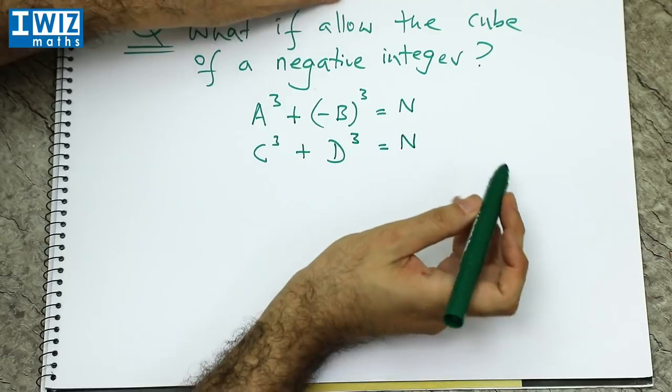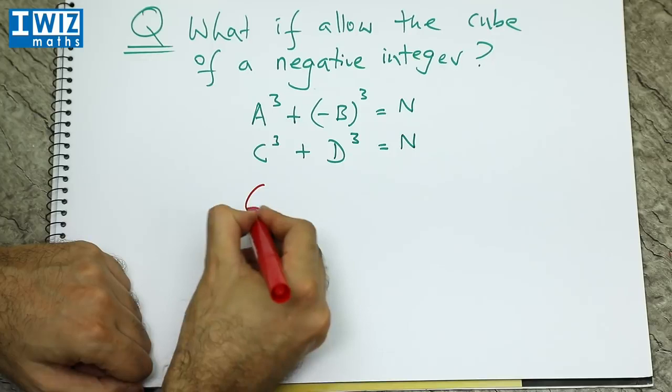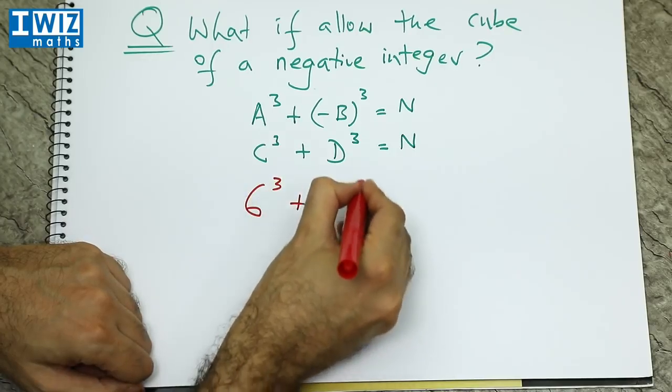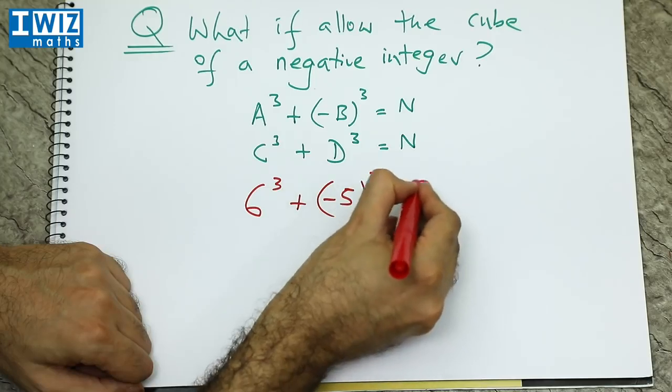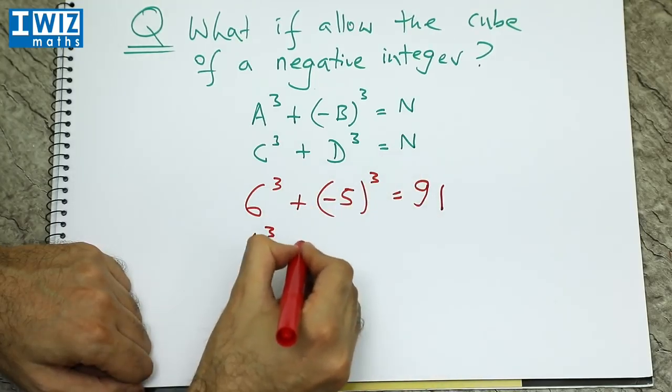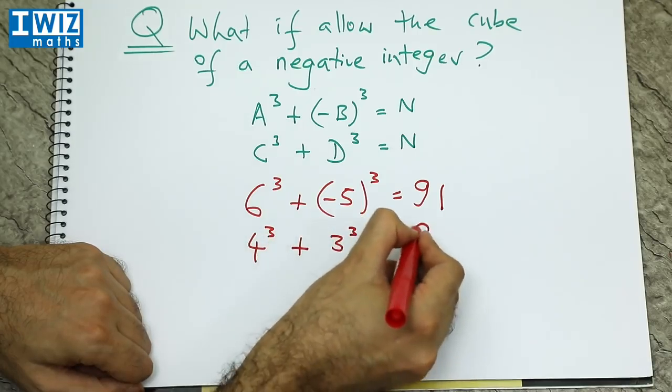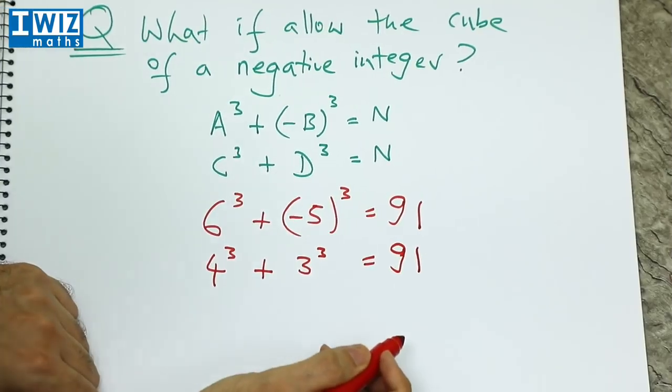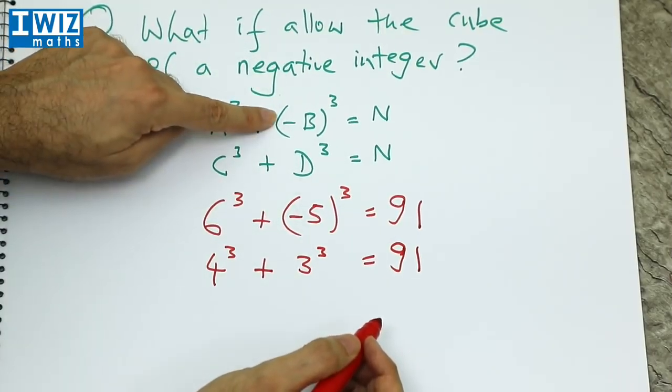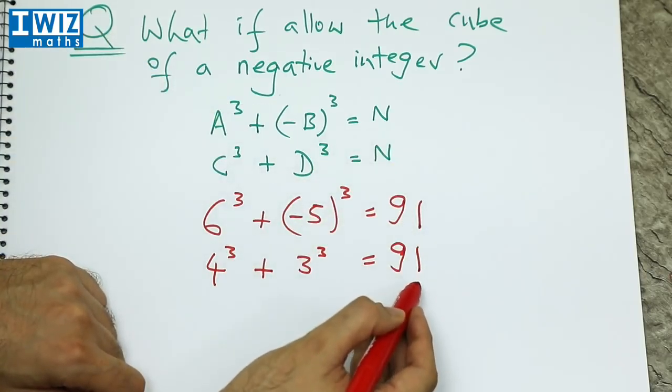The answer in this case is obviously different. So here we get 6 cubed plus minus 5 cubed which is 91 and 4 cubed plus 3 cubed which also works out to be 91. So if we actually allow a negative integer to come into the picture then the number n here is 91.